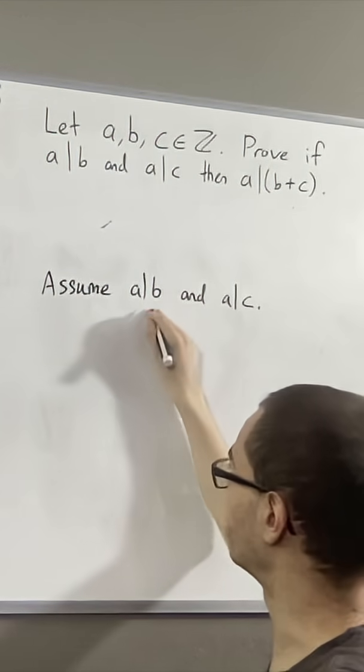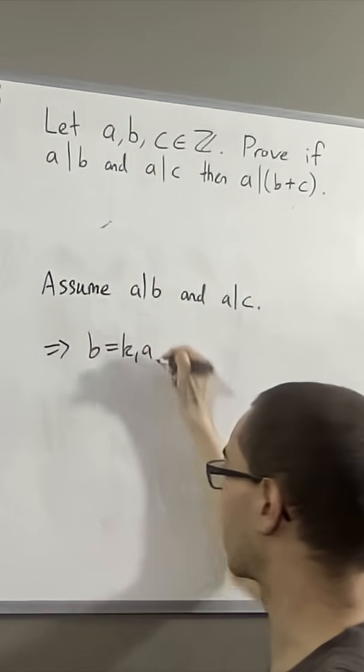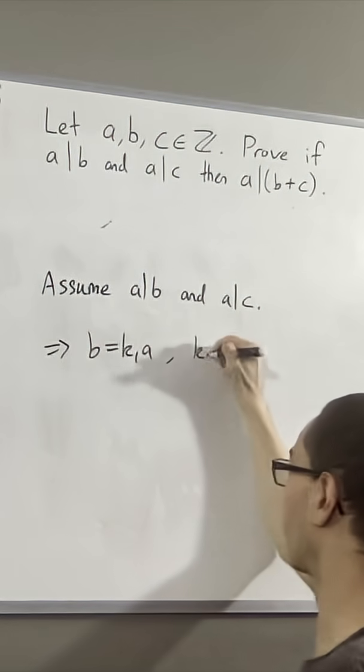Well, since a divides b, this means that b is equal to k1 times a for some integer k1.